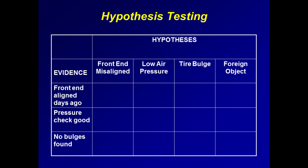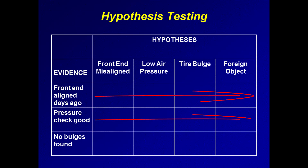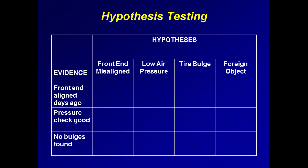Instead of evaluating each item of evidence against only one single hypothesis, the matrix compels us to systematically apply all of the evidence to all of the hypotheses, thus ensuring that our analysis is comprehensive and objective. The sole criterion in our evaluation is consistency — consistent means in harmony with, in accord with, and compatible with. We want to determine the degree to which the evidence is consistent (C), inconsistent (I), or ambiguous (?) with a particular hypothesis.